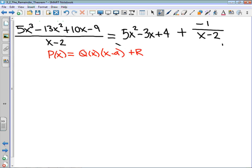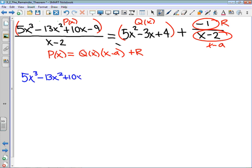I want to see if P of x is equal to Q of x times x minus a plus the remainder. Just to reiterate, this negative 1 is my remainder, this expression right here is Q of x, x minus 2 is the x minus a in that form, and then finally over here is P of x. I'm going to substitute those in because we want to actually check if this is going to be correct. So I am going to see if 5x cubed minus 13x squared plus 10x minus 9 is equal to 5x squared minus 3x plus 4 times x minus 2 plus negative 1.